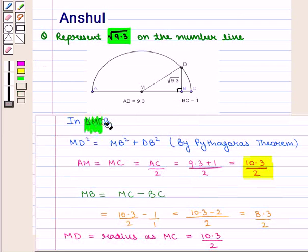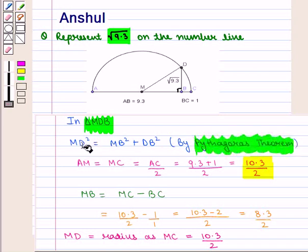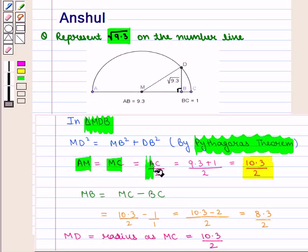Now in triangle MDB, we note that DB is perpendicular to line segment AC. So by Pythagoras theorem, MD squared is equal to MB squared plus DB squared. Now AM is equal to MC since M is the midpoint of AC, so AM equals MC equals AC divided by 2. And AC equals AB plus BC, that is 9.3 plus 1, over 2, which equals 10.3 by 2.